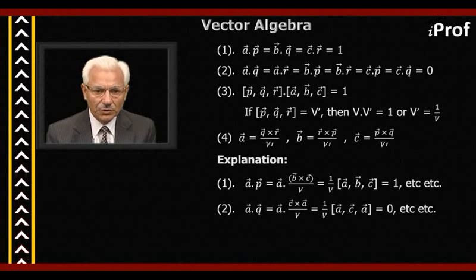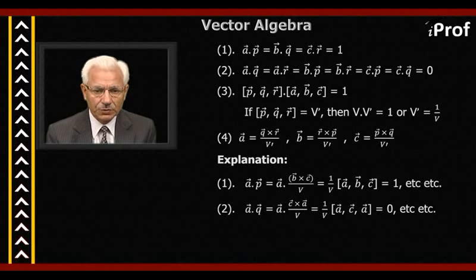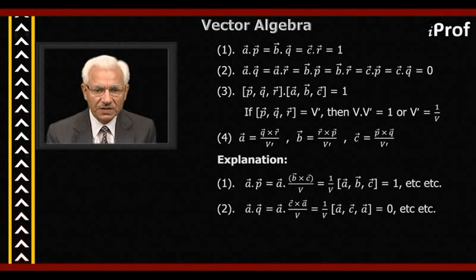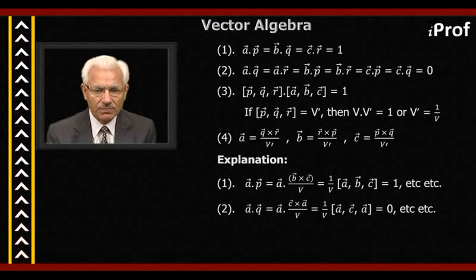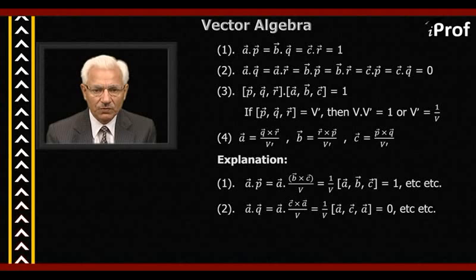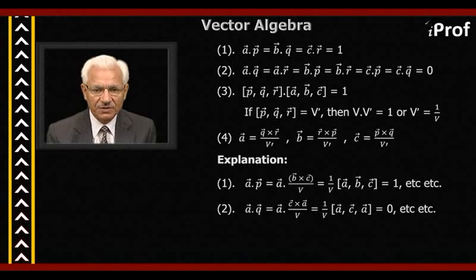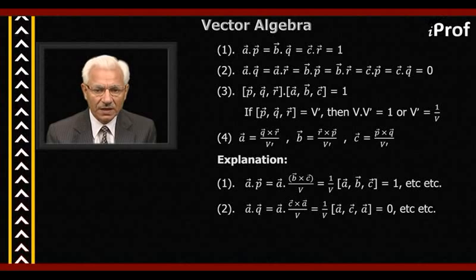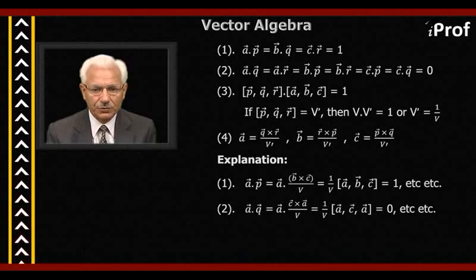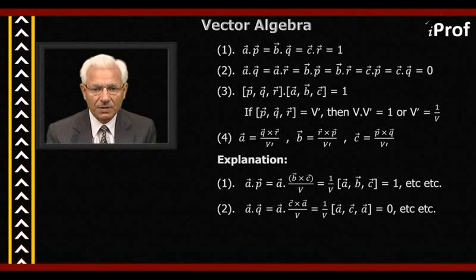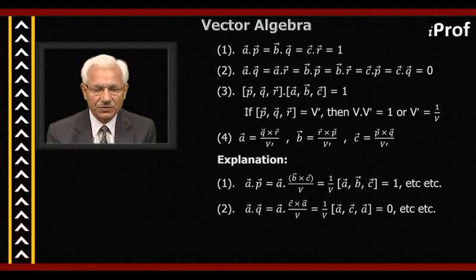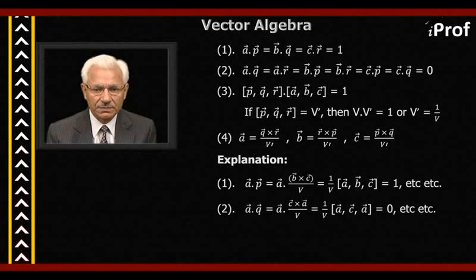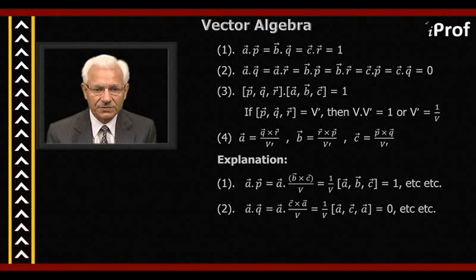Second, A dot Q equals A dot (C cross A divided by V), that is one by V times the triple scalar product of A, C, and A, which is equal to zero, because the triple scalar product vanishes if two of the three vectors are identical. Similarly, the others follow.